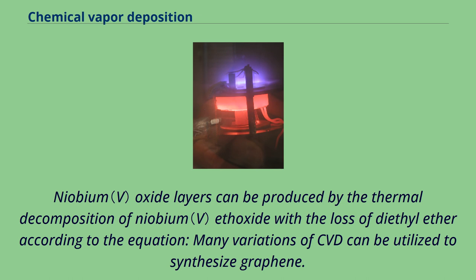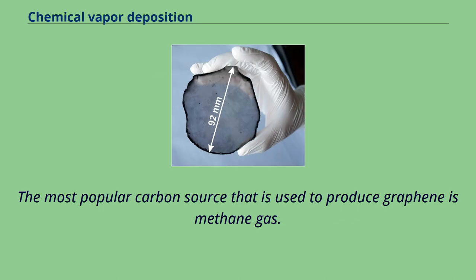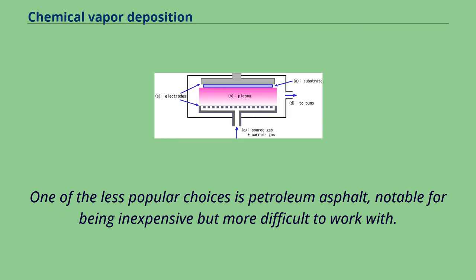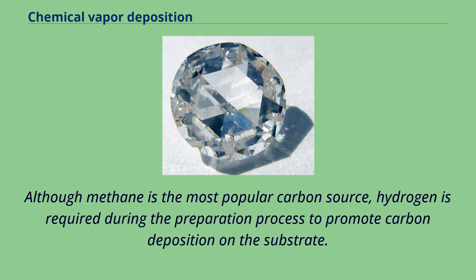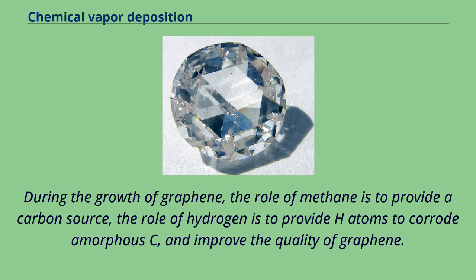Many variations of CVD can be utilized to synthesize graphene. Although many advancements have been made, the processes listed below are not commercially viable yet. The most popular carbon source used to produce graphene is methane gas. One of the less popular choices is petroleum asphalt, notable for being inexpensive but more difficult to work with. Although methane is the most popular carbon source, hydrogen is required during the preparation process to promote carbon deposition on the substrate. If the flow ratio of methane and hydrogen are not appropriate, it will cause undesirable results. During the growth of graphene, the role of methane is to provide a carbon source, and the role of hydrogen is to provide H atoms to corrode amorphous carbon and improve the quality of graphene.